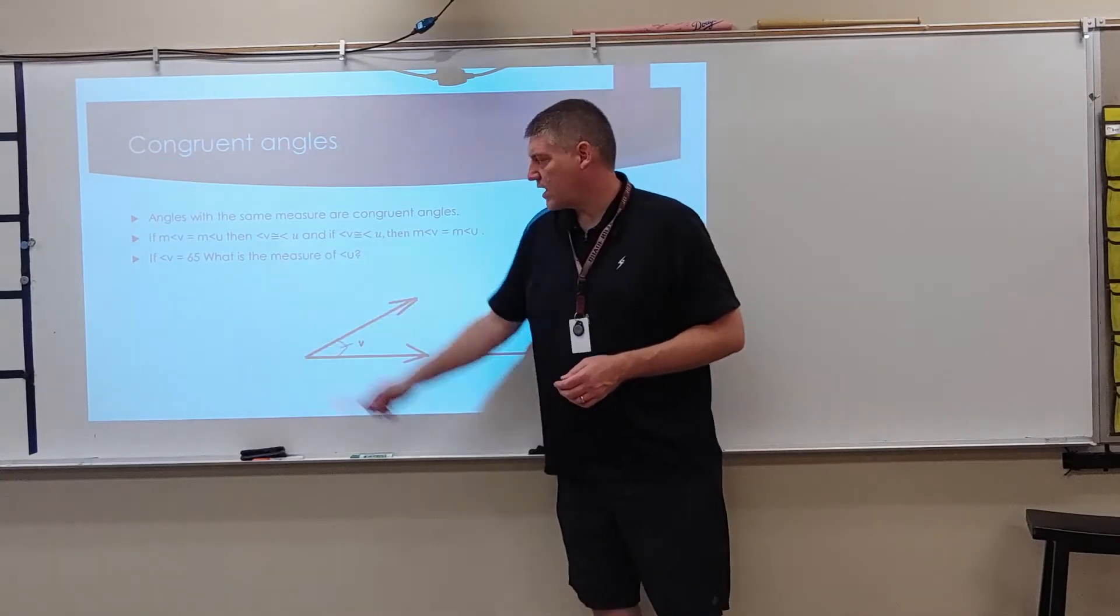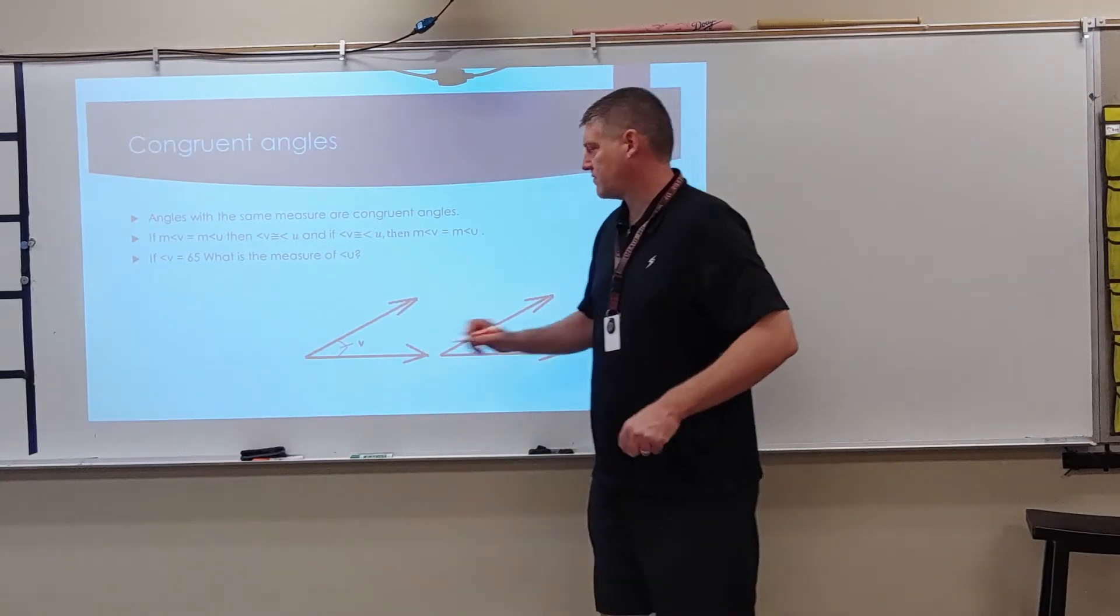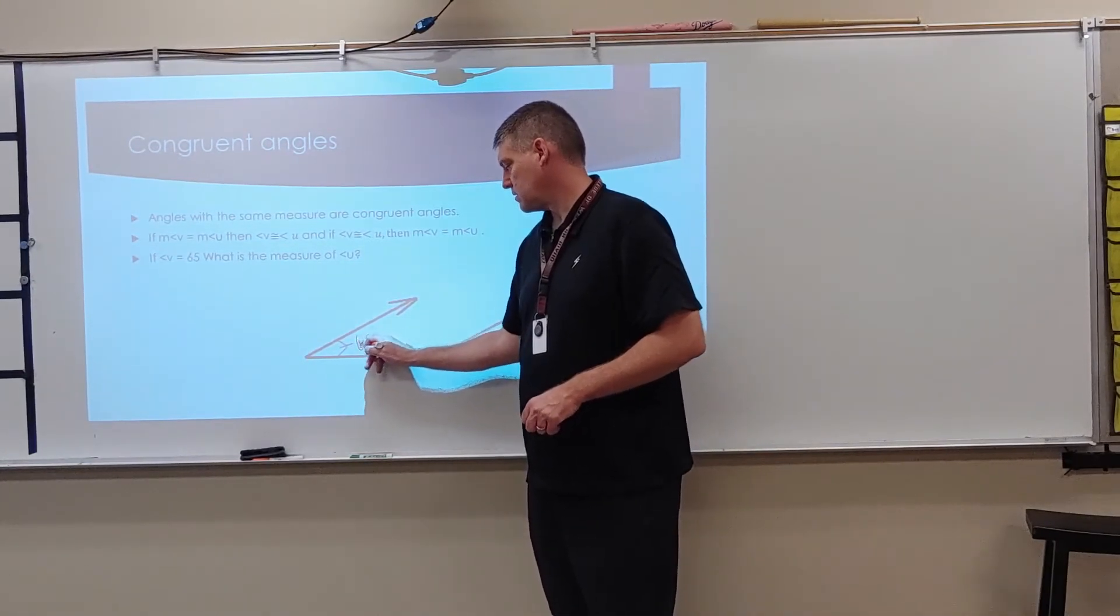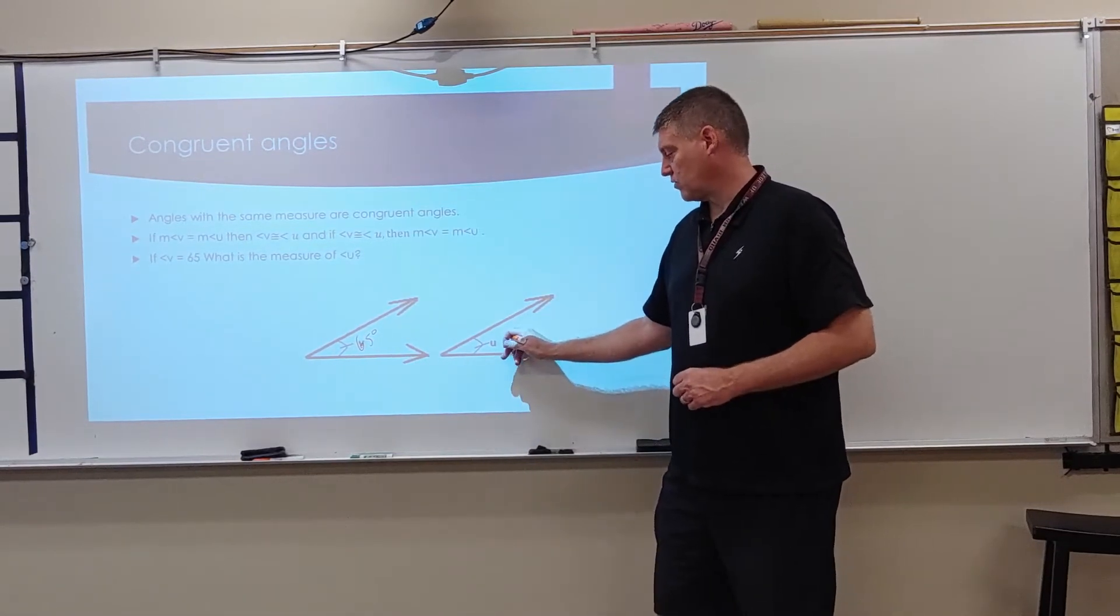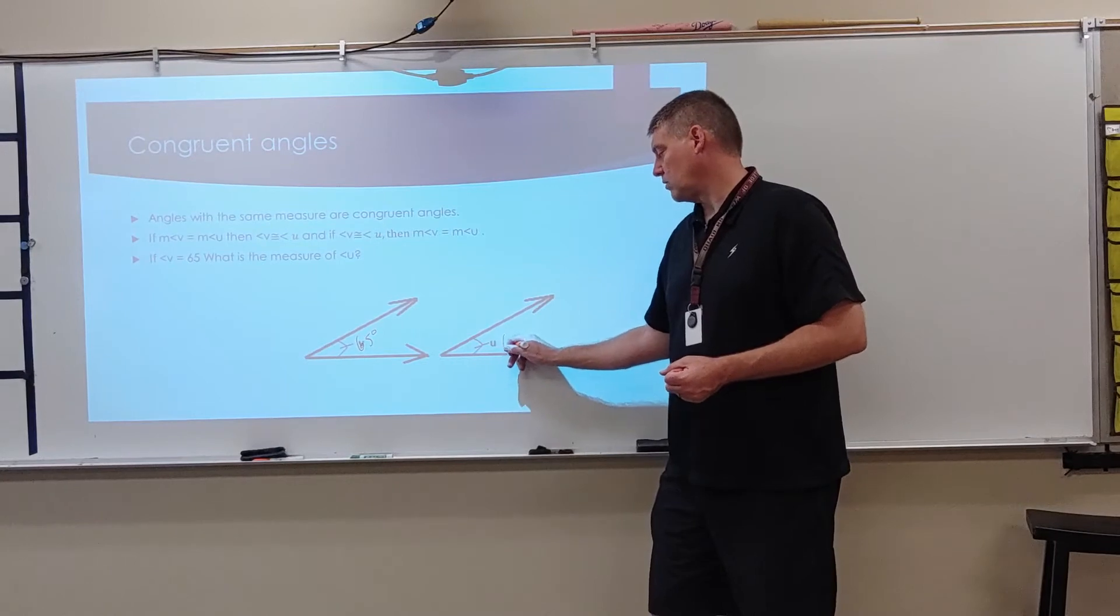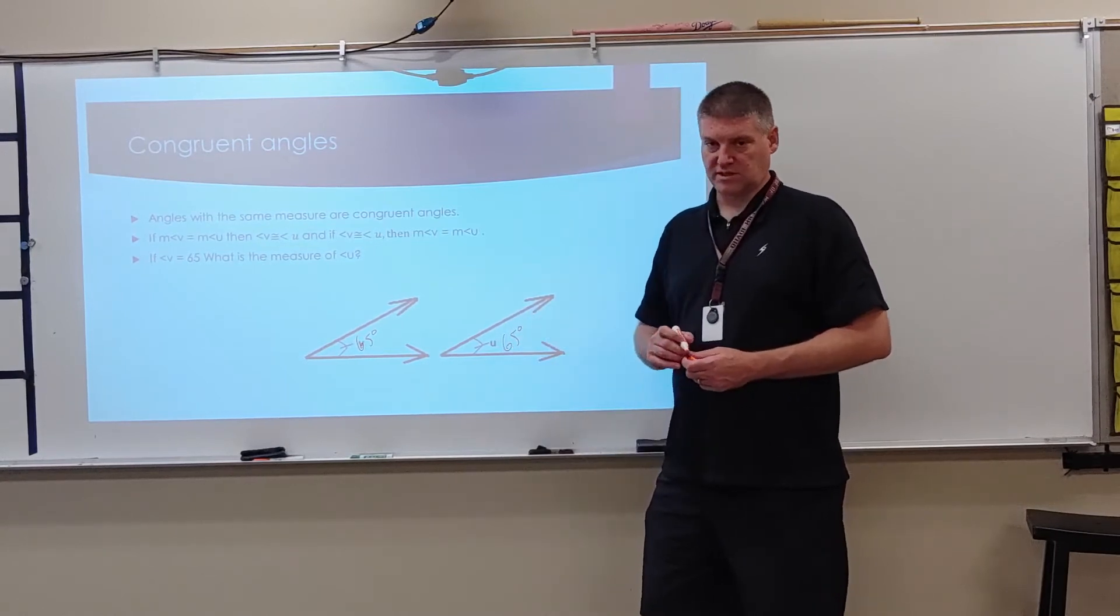So if angle V is 65 degrees, what is the measure of angle U? Well, they are congruent, which means they are also equal, so it is also 65 degrees.